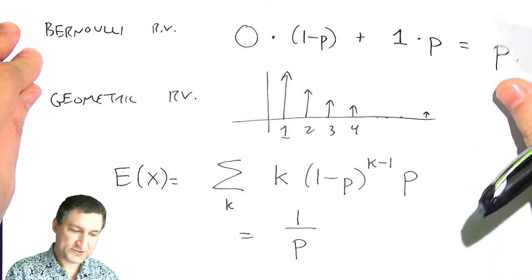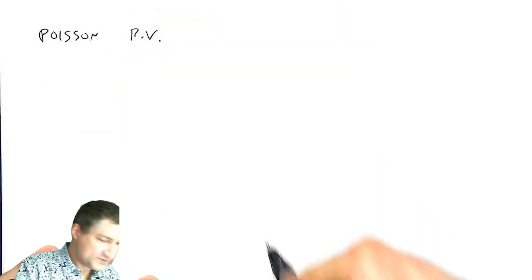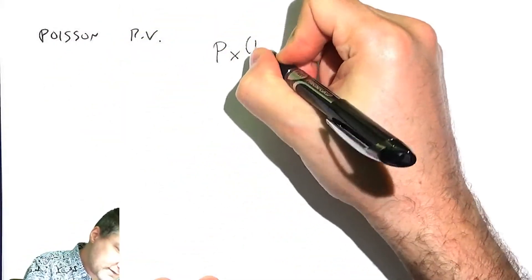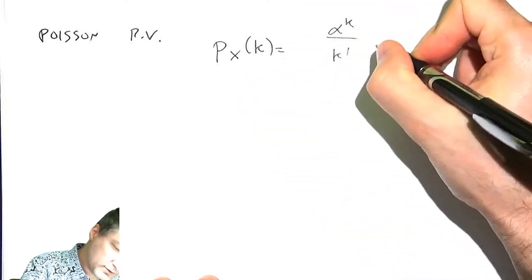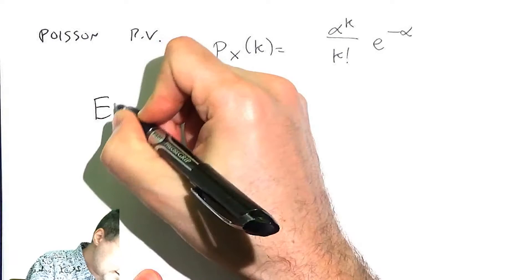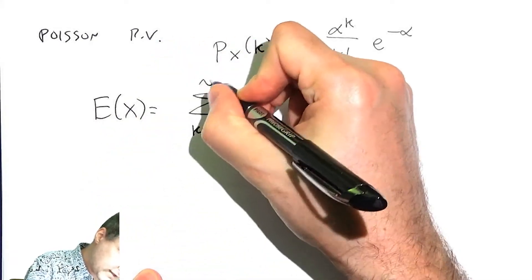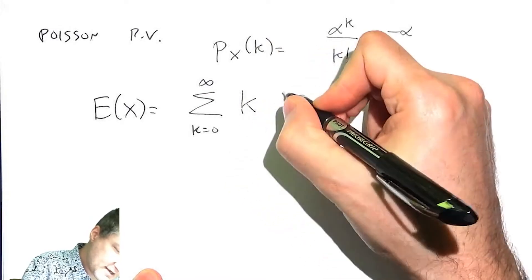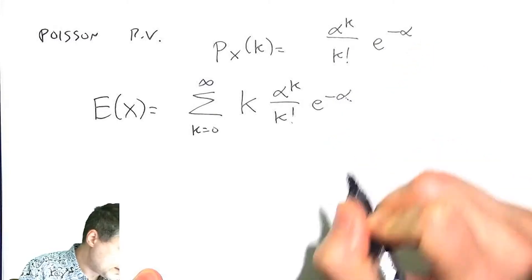And then we also talked about the Poisson random variable. So here, remember that the PMF for that random variable was a little bit more weird looking, where alpha was what we called this parameter, the sample mean. So what is the expected value here?